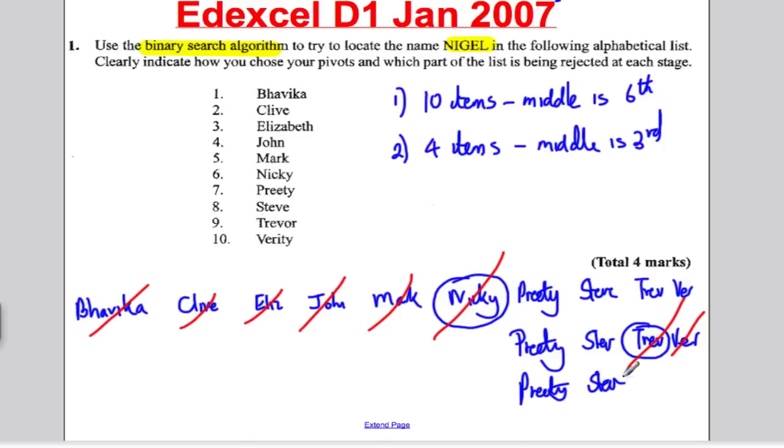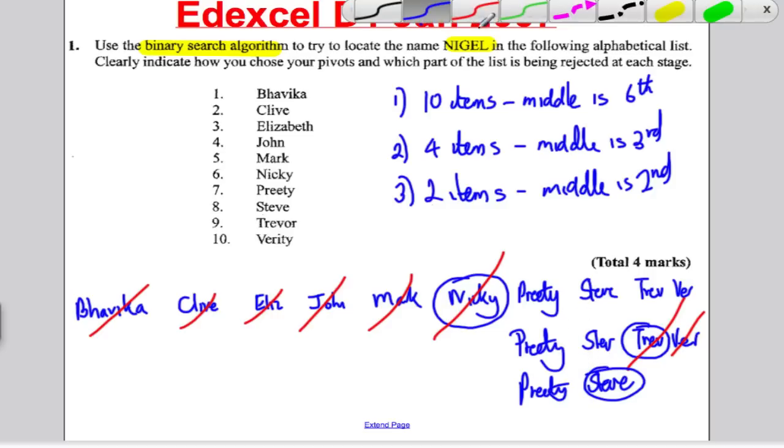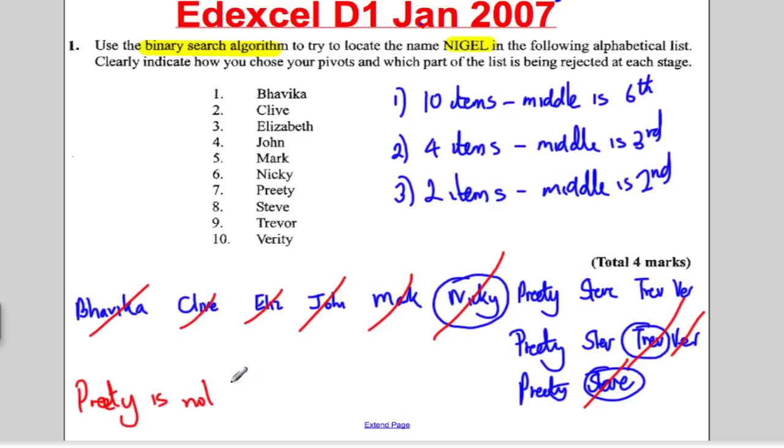I know that Nigel would be before Trevor, so I cross off Trevor and the ones after Trevor. Then my third stage would simply be Pretty and Steve. The middle of two items is defined as the second, which is Steve. I know Nigel should be before Steve, so I cross off Steve. Finally I have Pretty as my answer. Pretty is not Nigel, so Nigel is not in this list and we're done.